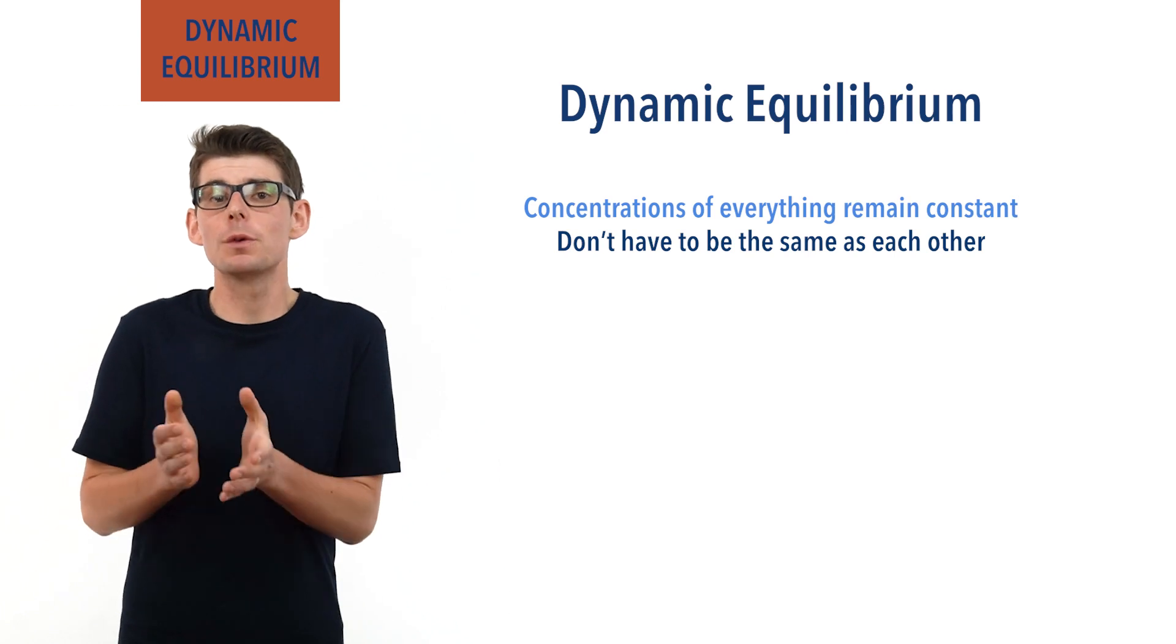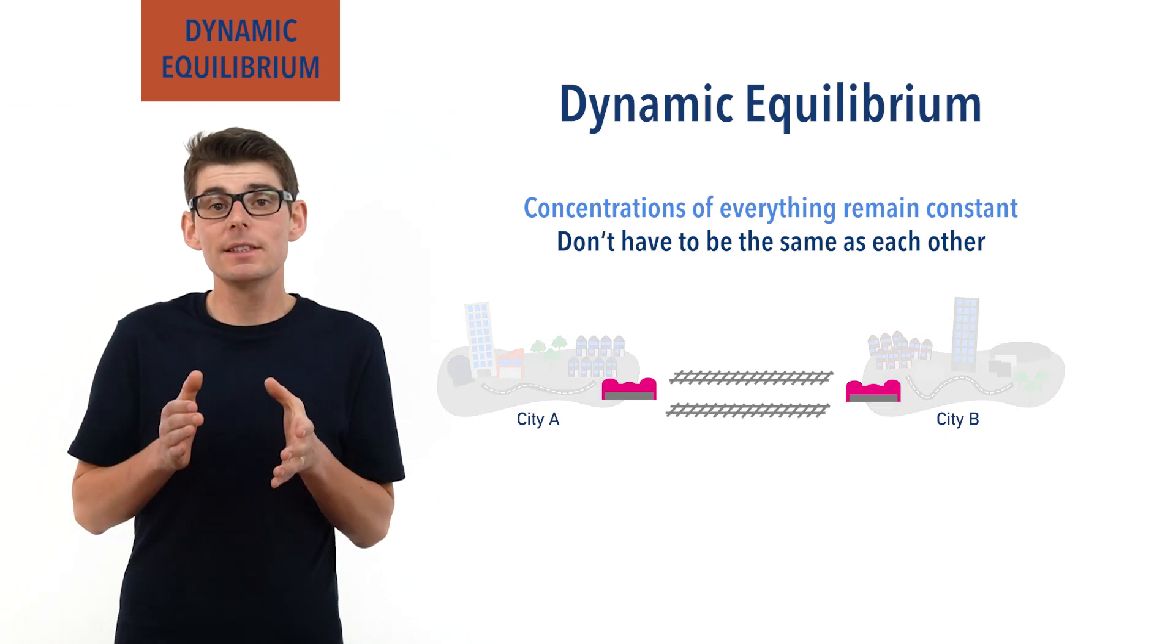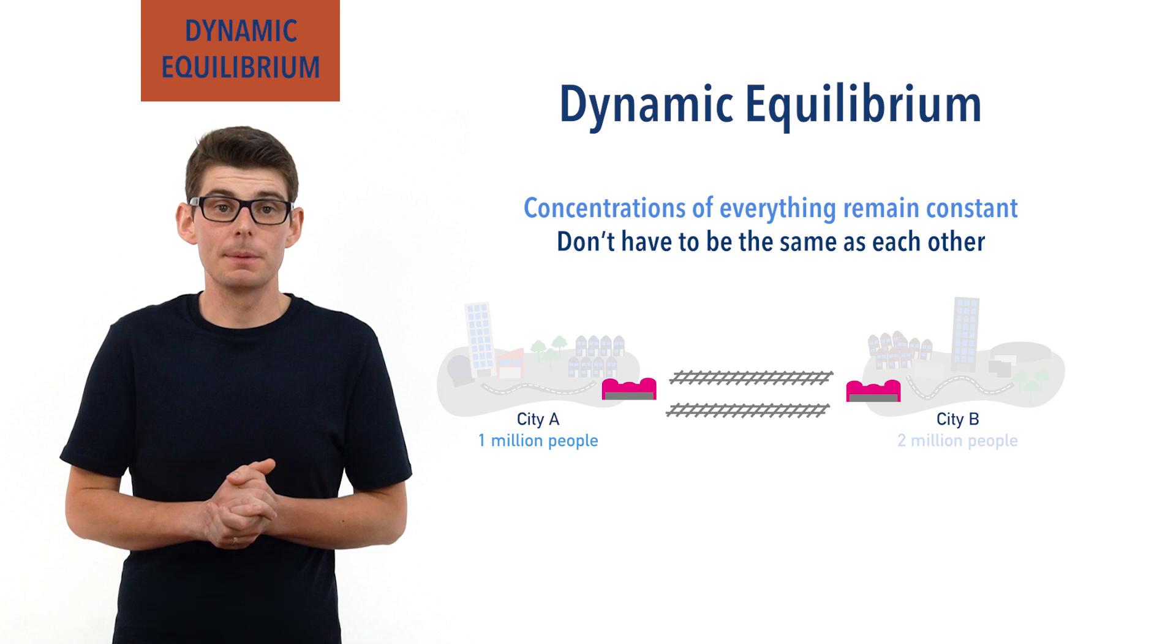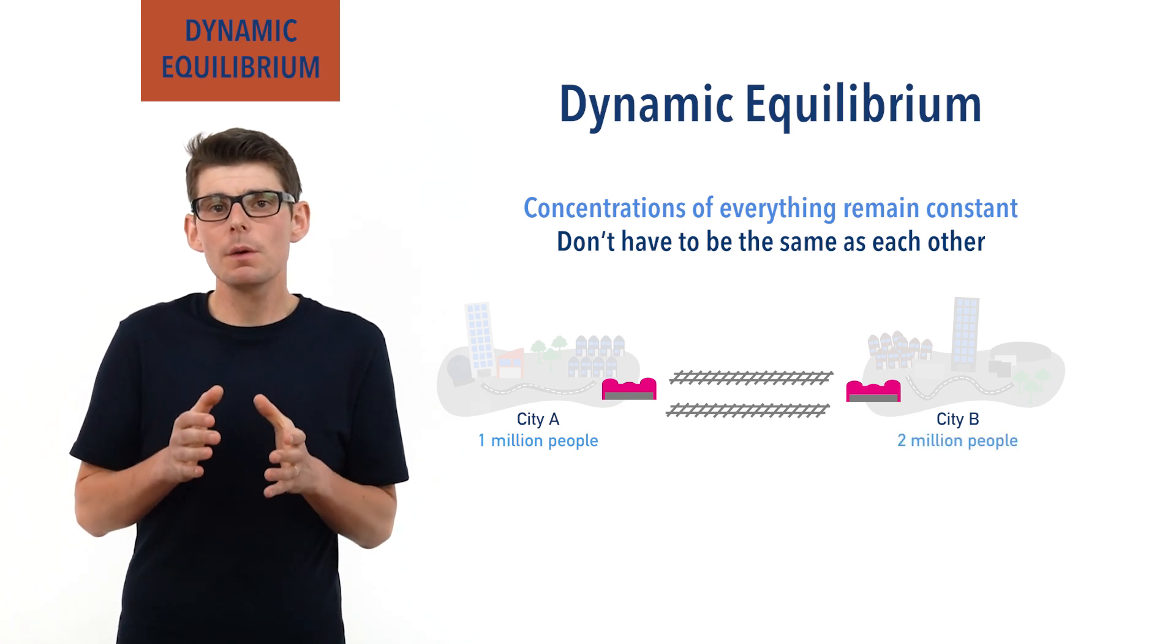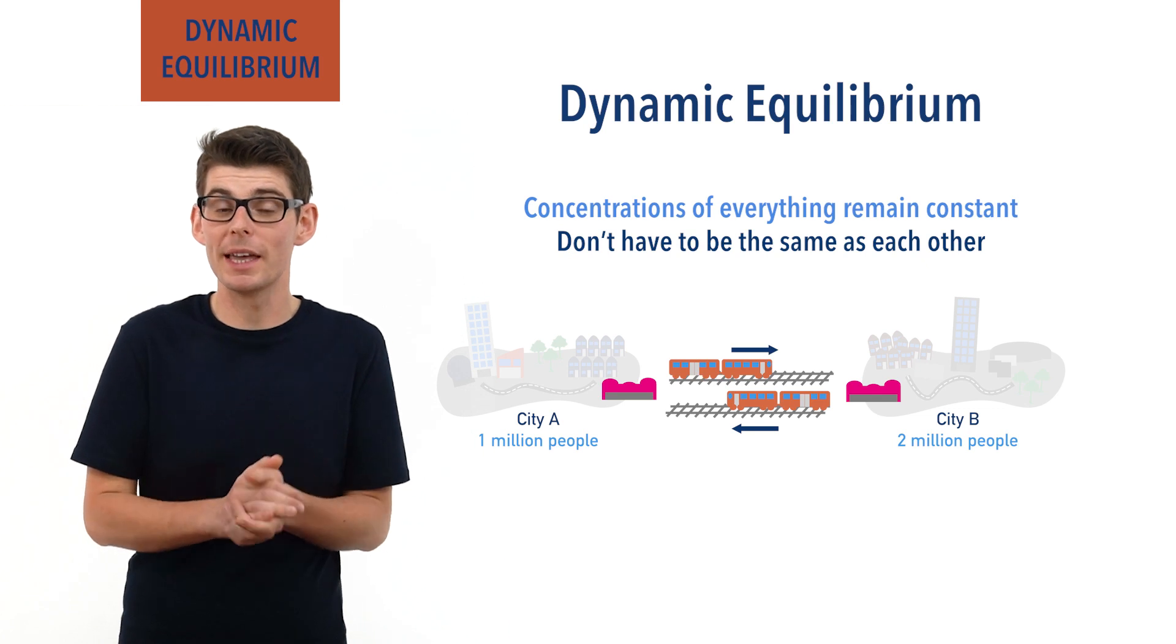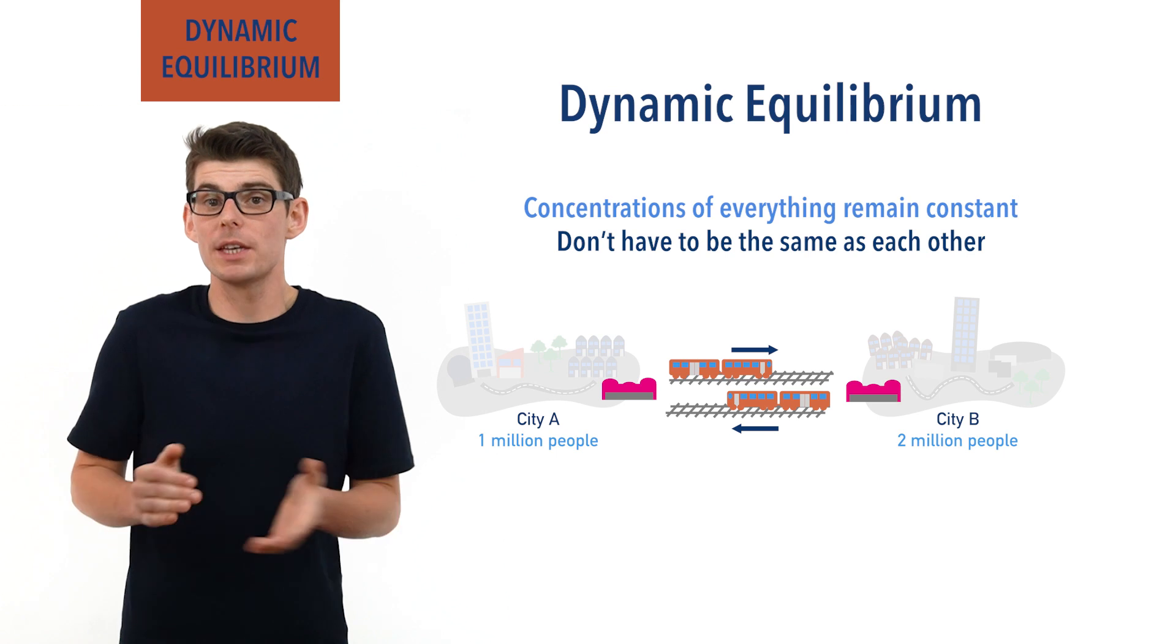Let's imagine you have two cities, A and B, and they are joined by a railway. In city A there are one million people and in city B there are two million people. If the trains going between them constantly carry the same number of people each way, the total number of people in each city will be constant. It will never change.